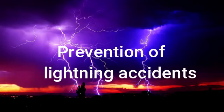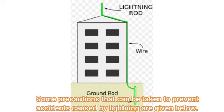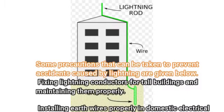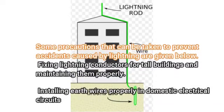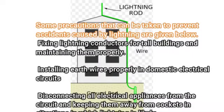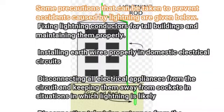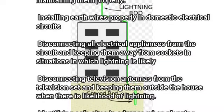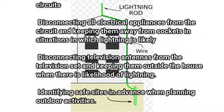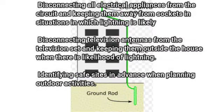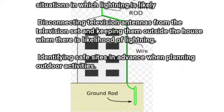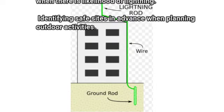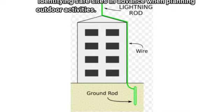Prevention of lightning accidents. Some precautions that can be taken to prevent accidents caused by lightning: fix lightning conductors for tall buildings and maintain them properly; install earth wires properly in domestic electrical circuits; disconnect all electrical appliances from the circuit when lightning is likely; disconnect television antennas from the TV set when there is likelihood of lightning; and identify safe sites in advance when planning outdoor activities.